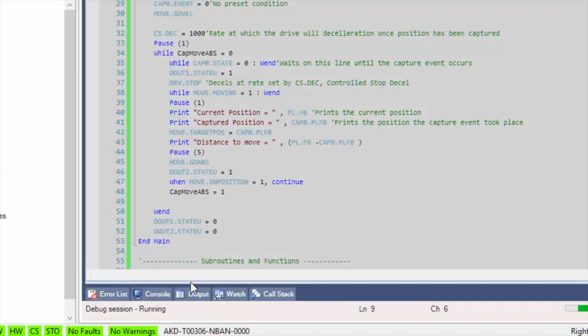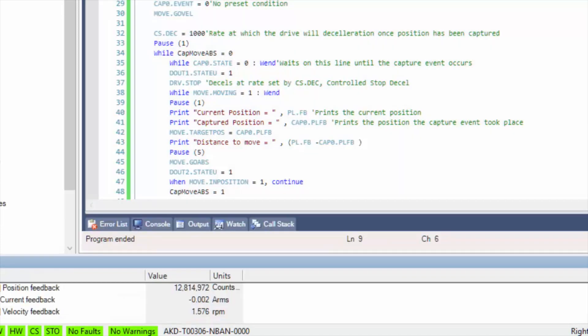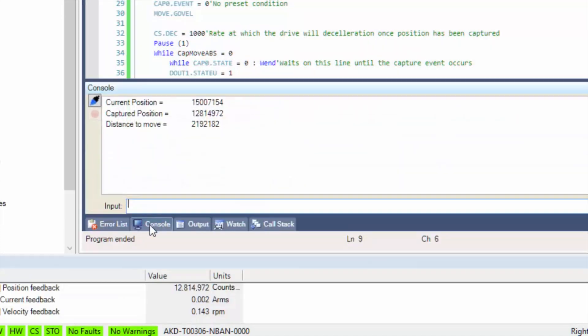To move back to the capture position, we can make an absolute move. The target position will be equal to the capture position. Once we have the capture position, there is a lot we can do with it.